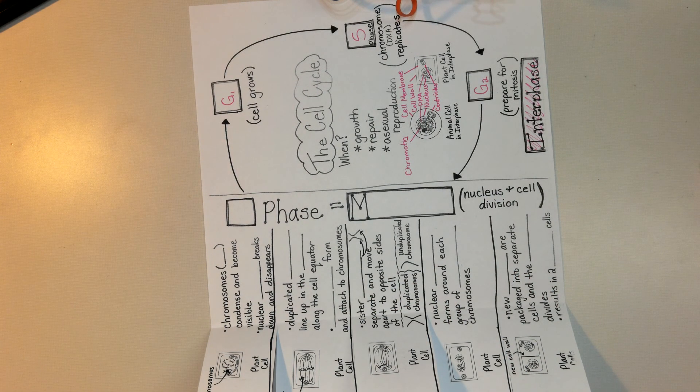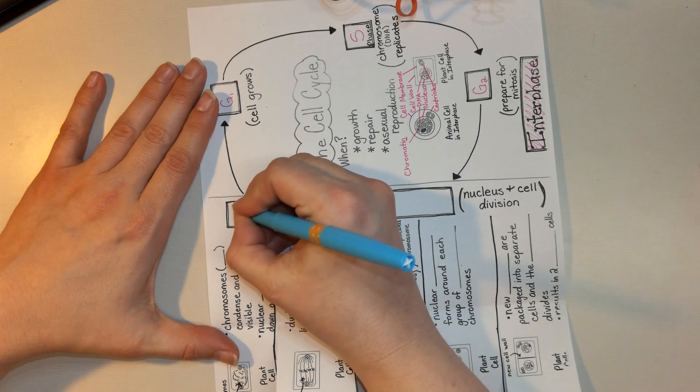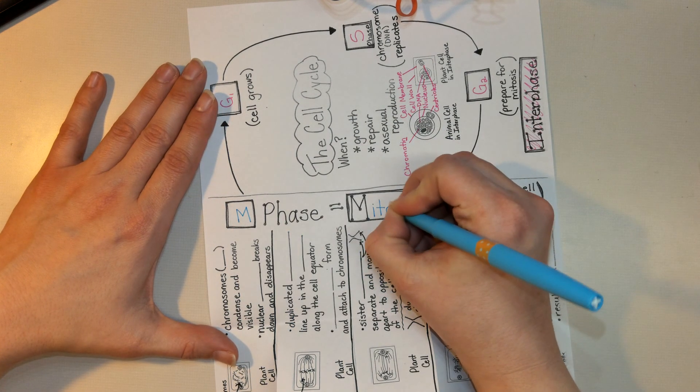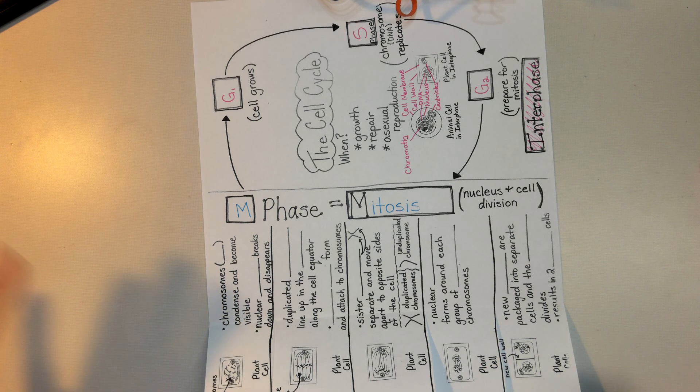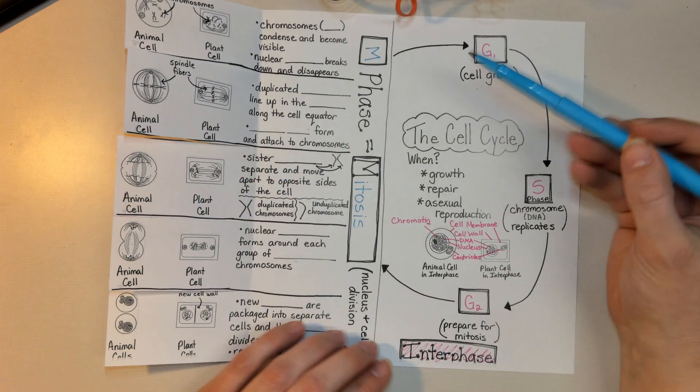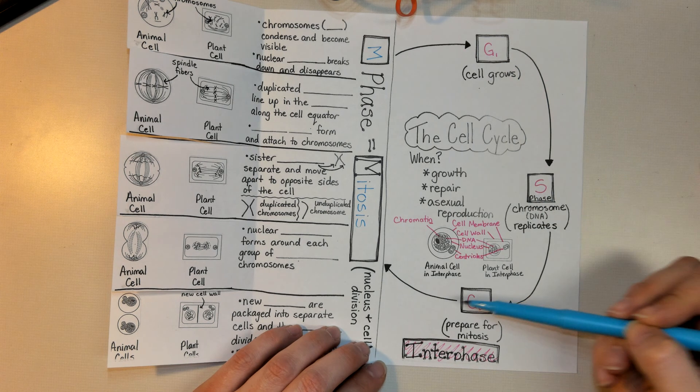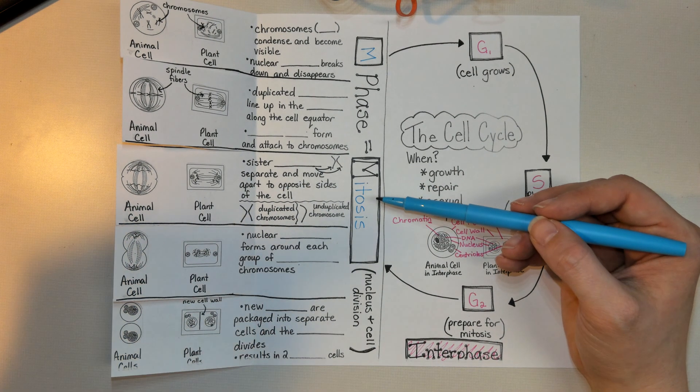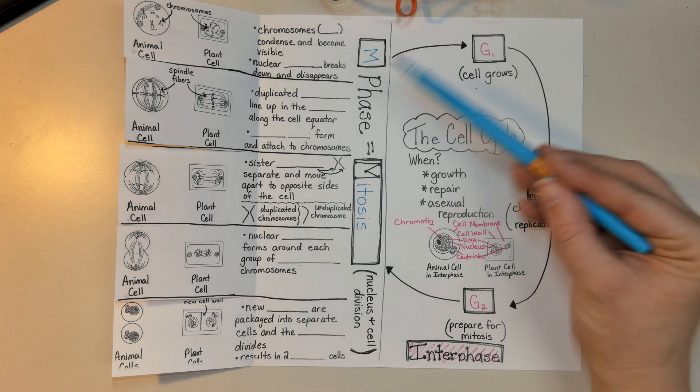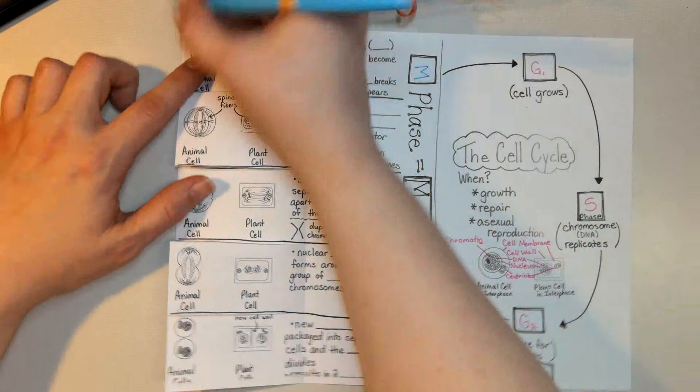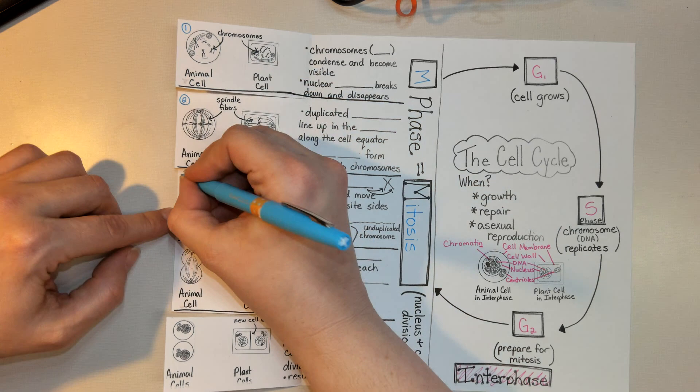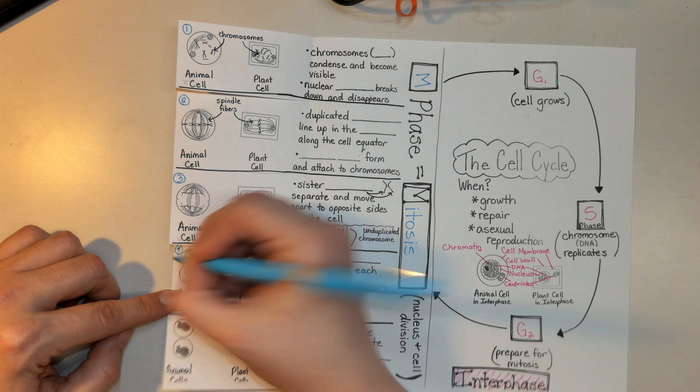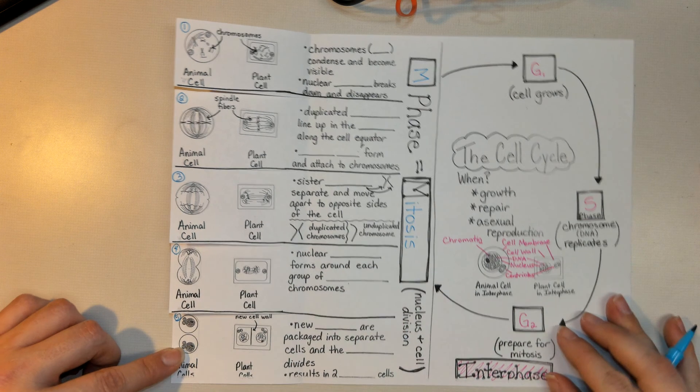And this is called M-phase. Let me grab a different color of marker for M-phase. Mitosis is where the nucleus and the cell are going to both divide. Now, this foldable is a little weird in that it goes in order from G1, S, G2, and then into mitosis. But the steps of mitosis are ordered 1, 2, 3, 4, and 5. Then we go back into G1. So make sure you know that this top foldable here, this top flap, that's step 1 of M-phase, then step 2, step 3, step 4, and step 5. All right, let's talk through what happens in each step of mitosis.